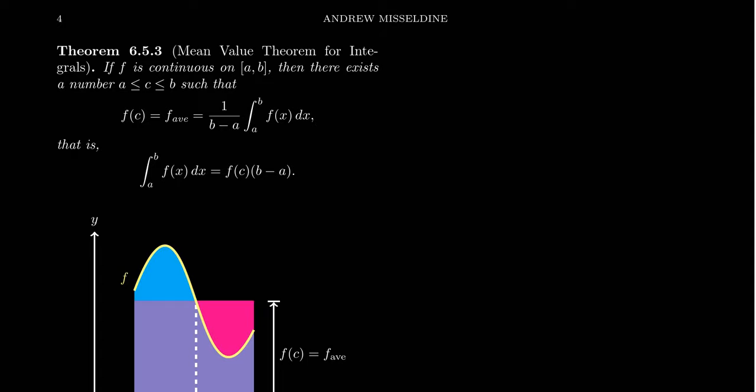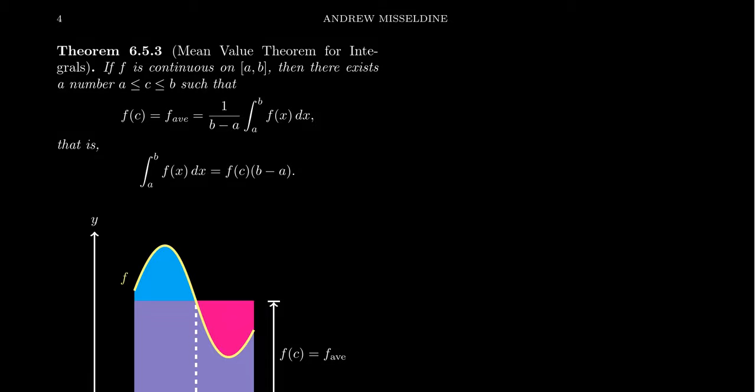In the previous video we saw how to compute the average value of a function. It's fairly simple — it's just 1 over b minus a times the integral of f from a to b. That's all there is to it, and so as long as the integral is easy to compute, the average value is fairly simple to compute as well.